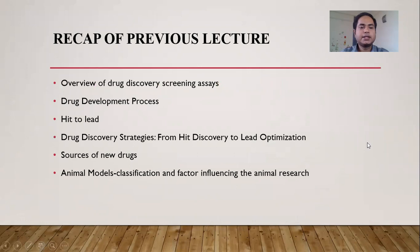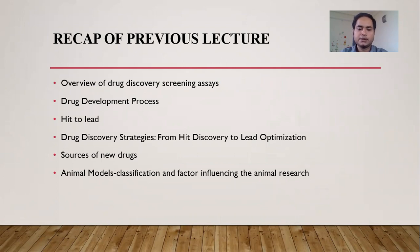In the previous class, we discussed the overview of drug discovery screening assay, drug development process, hit to lead identification, drug discovery strategy, from hit discovery to lead optimization, the source of new drugs including animal source, plant source, synthetic drugs, and mineral sources. The animal model classification and factors — extrinsic and intrinsic — that influence animal research were also discussed.